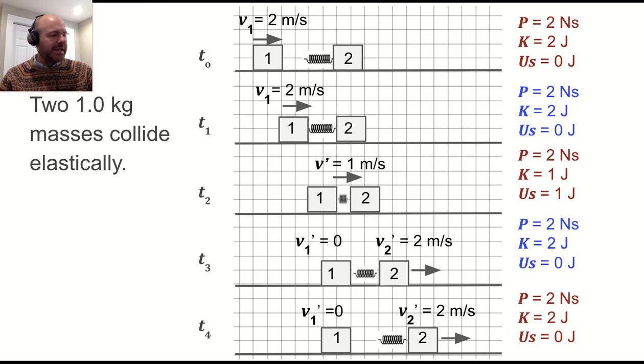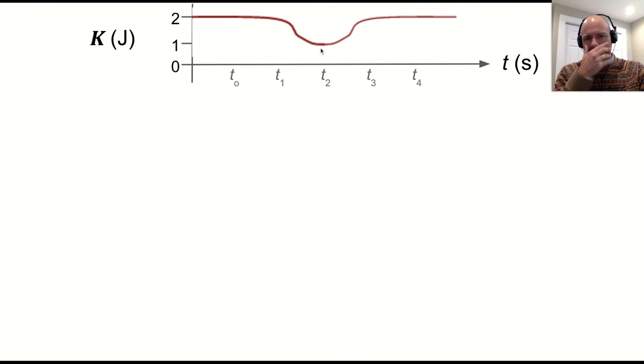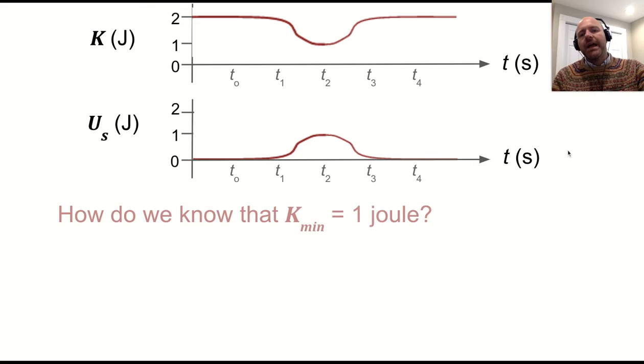That's what's actually happening during the collision, before, during, and after. Some of the energy goes into spring potential for a little bit, and then it goes back. So graphically, it looks something like this. The kinetic energy of the system dips and goes back up. The potential energy goes up. So the mechanical energy is conserved throughout, and the kinetic energy is the same at the end.